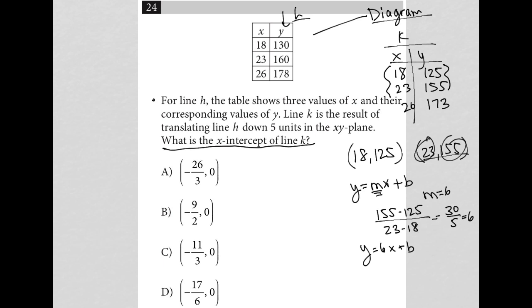And what I'd have here is 155 equals 6 times 23 plus B. 6 times 23 on my calculator is 138, so I have 155 equals 138 plus B.